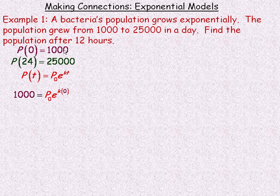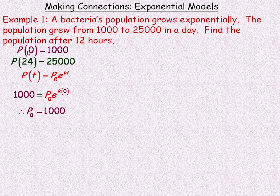Using P(0) = 1,000, we substitute 1,000 for population and 0 for t. So k times 0 is 0, and e to the power of 0 is 1, giving us 1,000 = 1 × p₀. Therefore p₀ = 1,000. In this formula, p₀ represents the original amount — the starting population.